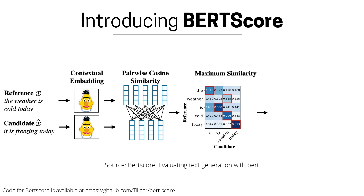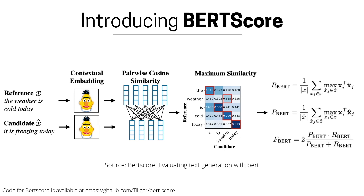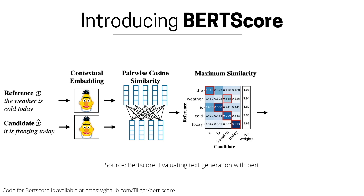We then sum the maximum similarity for each word from the reference to the candidate and normalize it, which we call recall. The similar operation is done from the candidate to the reference, normalizing by the total number of words in the candidate, which we call precision. Accordingly, we can compute the F-score as the harmonic mean of precision and recall.